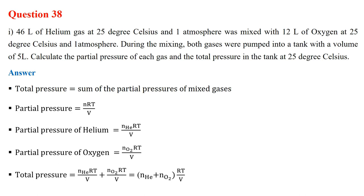We need to use the ideal gas law. The total pressure will be the partial pressure of helium plus the partial pressure of oxygen. The partial pressure is equal to the number of moles times the gas constant times temperature over volume, which comes from PV = nRT, so pressure P = nRT/V.